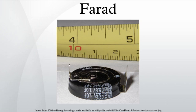One farad is defined as the capacitance of a capacitor across which, when charged with one coulomb of electricity, there is a potential difference of one volt. Conversely, it is the capacitance which, when charged to a potential difference of one volt, carries a charge of one coulomb.